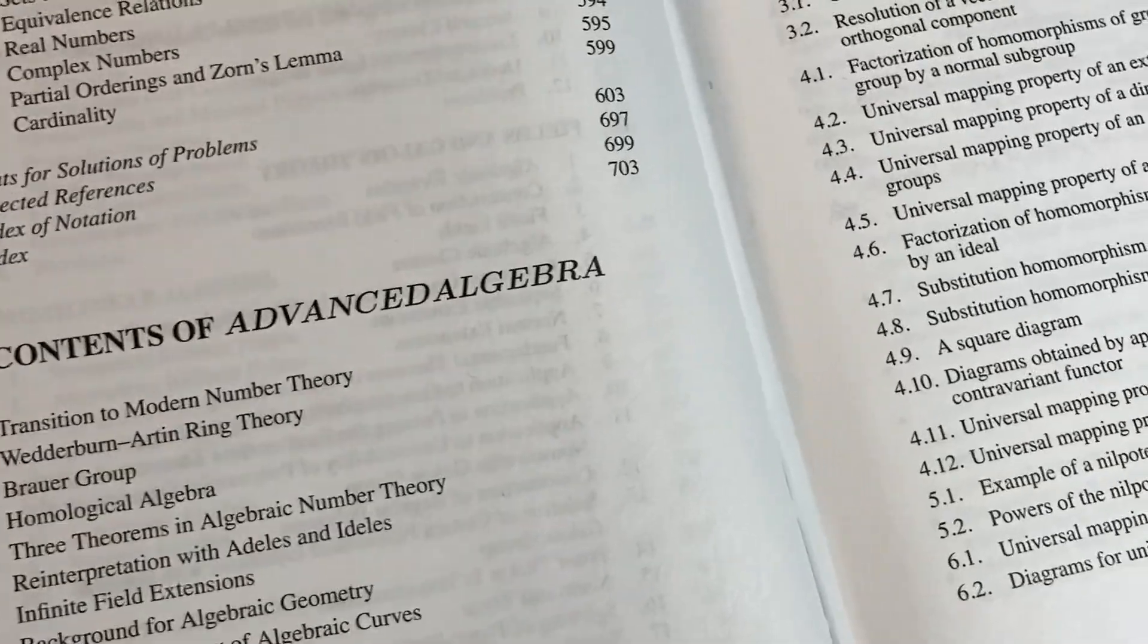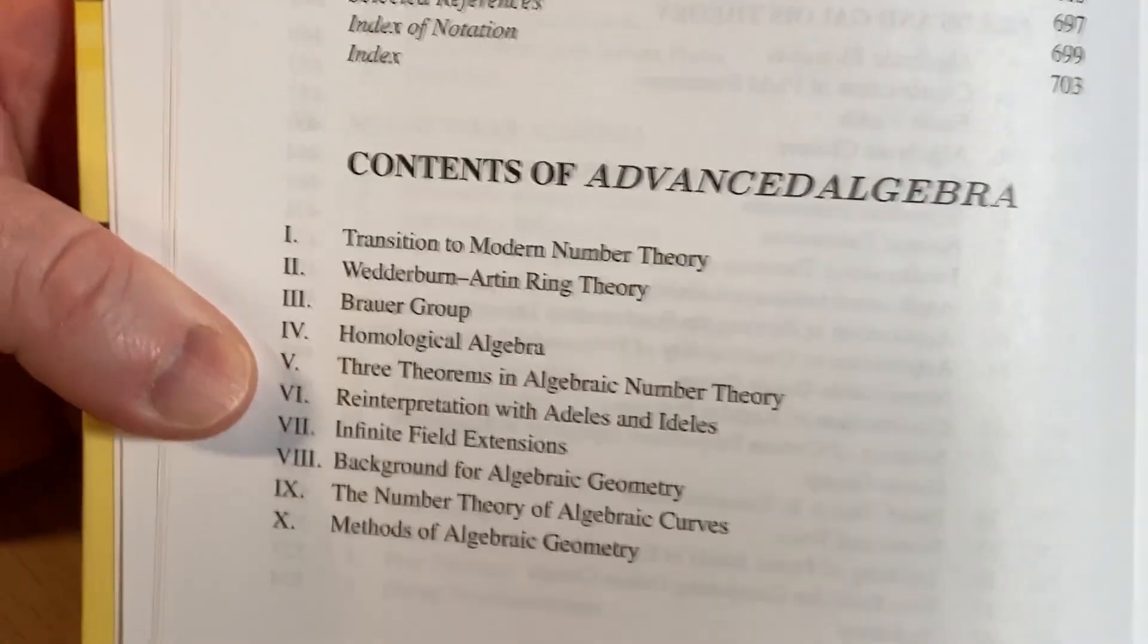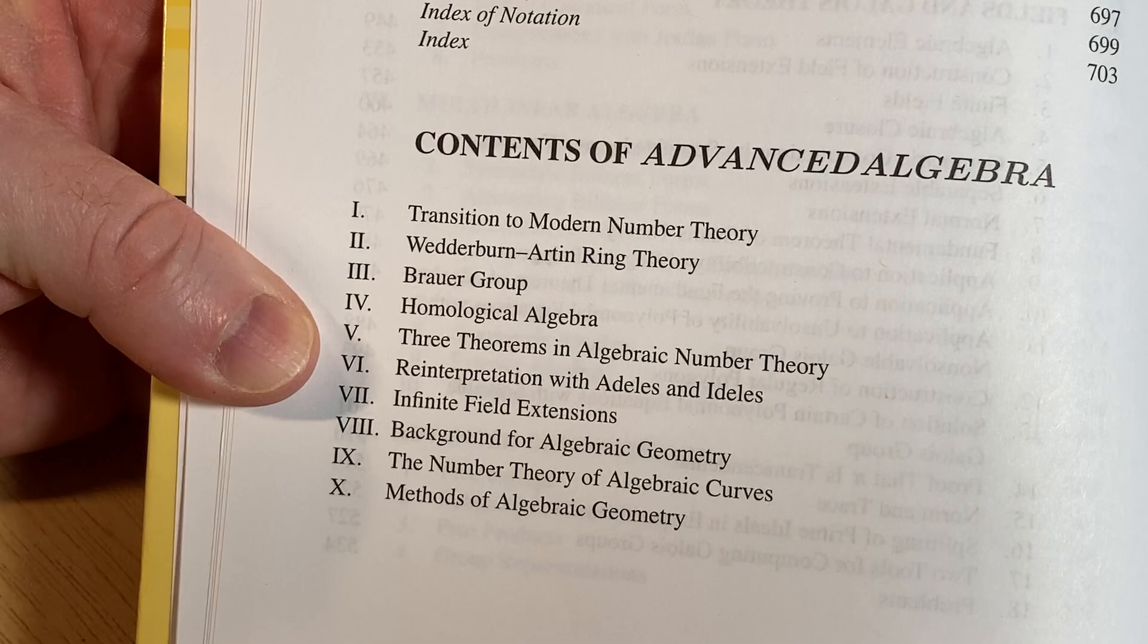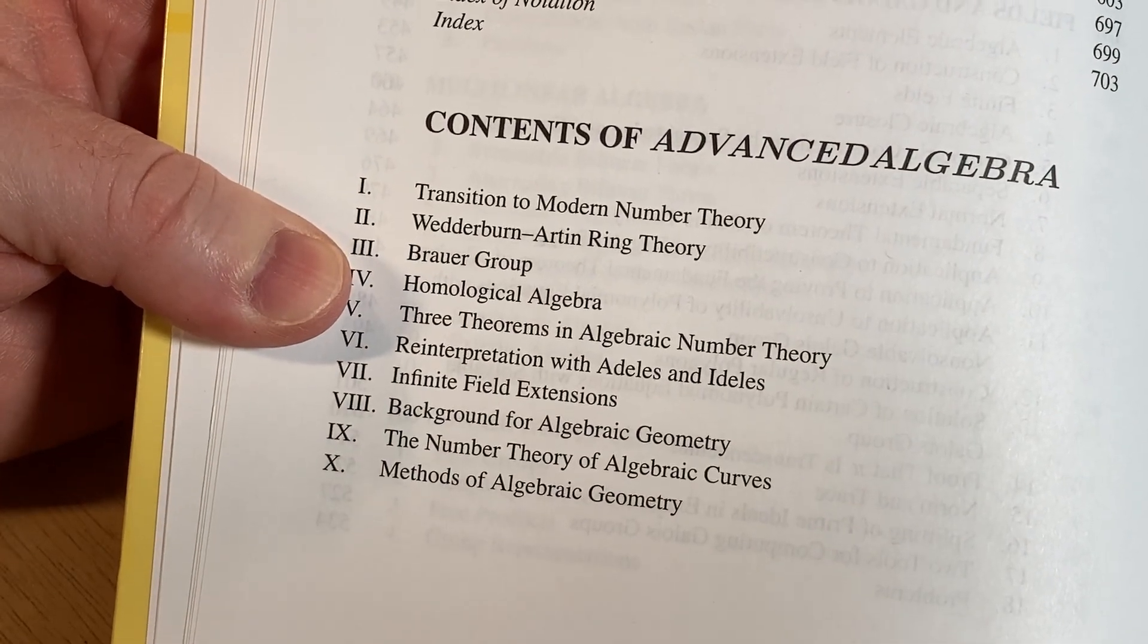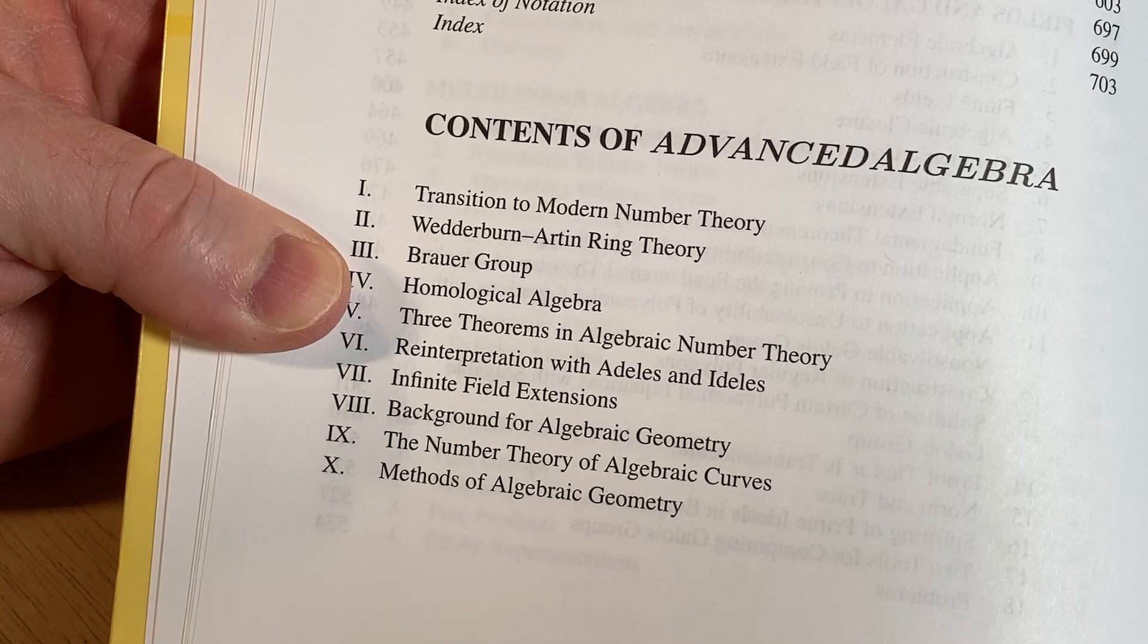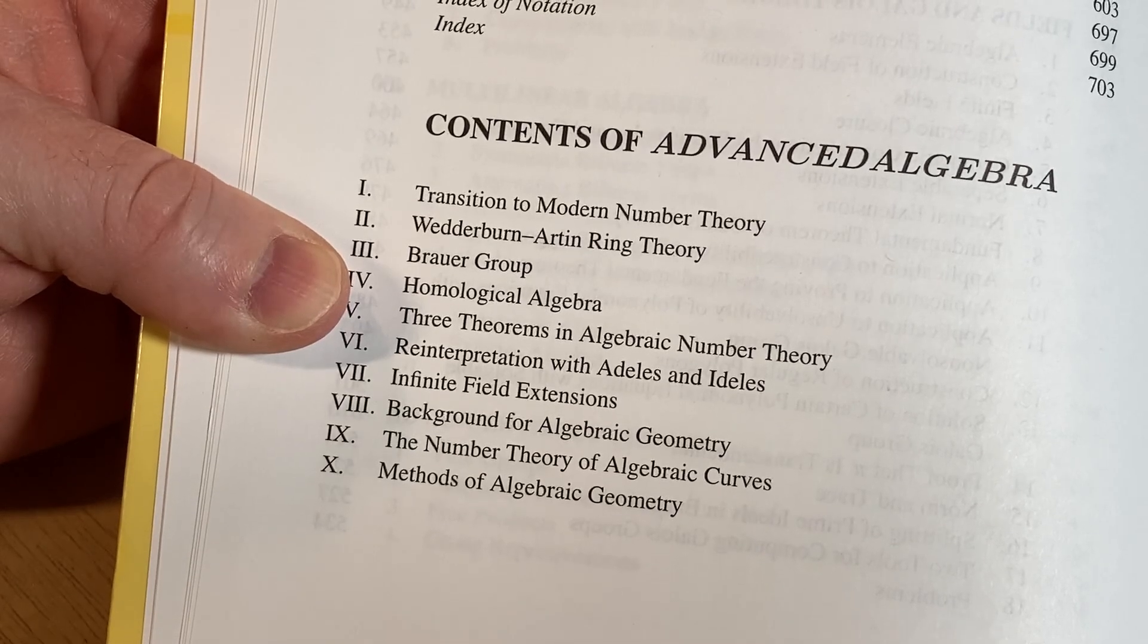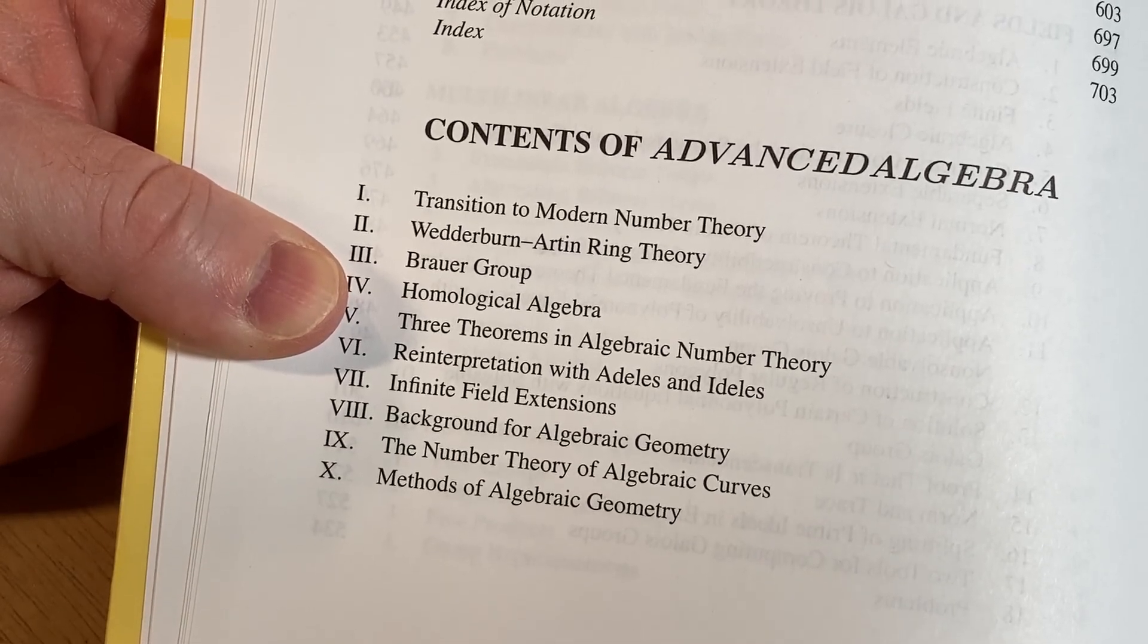And then look at this—this is another book I don't have. This is Contents of Advanced Algebra, so it's transition to modern number theory, Wedderburn-Artin ring theory, Brauer group, homological algebra. So some seriously advanced stuff here, right? And that's the name Advanced Algebra.